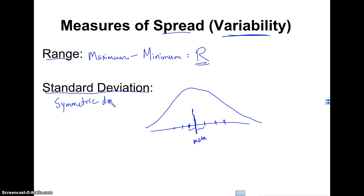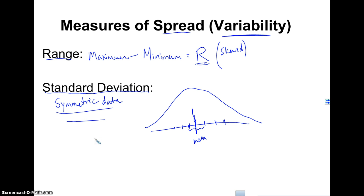We're going to use standard deviation to talk about spread and variability when we have symmetric data. If the data are skewed to the left or right, we're not going to use standard deviation — we'll use the range instead. The range can be used all the time, but standard deviation is best for symmetric data. Standard deviation tells us, on average, how far the data are from the mean.